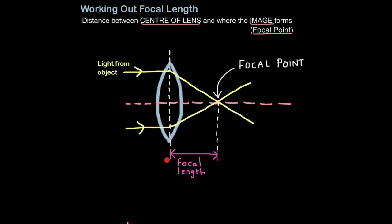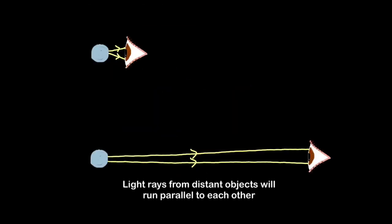Different lenses will have different focal lengths — this is why if you need glasses, one size doesn't fit all. Before I show you how to practically work out focal length, you need to understand one simple point. When your eyes are close to an object, the light will spread out and come in at a very sharp angle. The further away you are from an object, the less sharp this angle becomes. Given more space, the light rays come in almost parallel to each other. So remember that light rays from distant objects will run parallel to each other — this is important for the next bit.